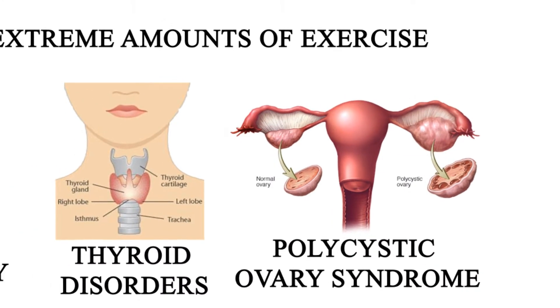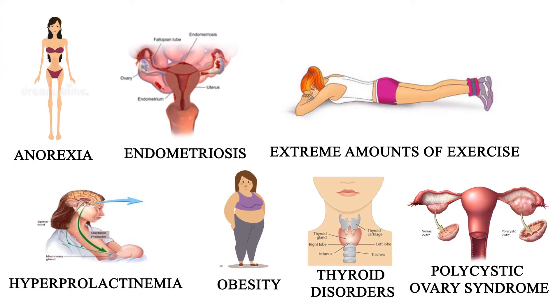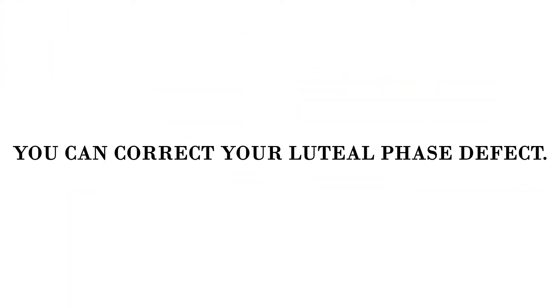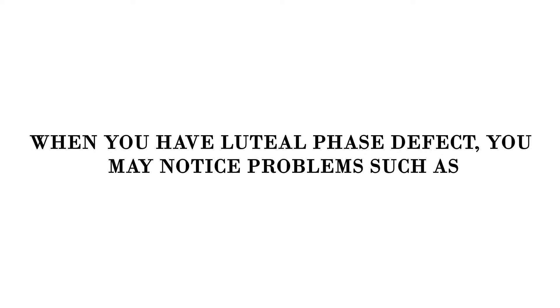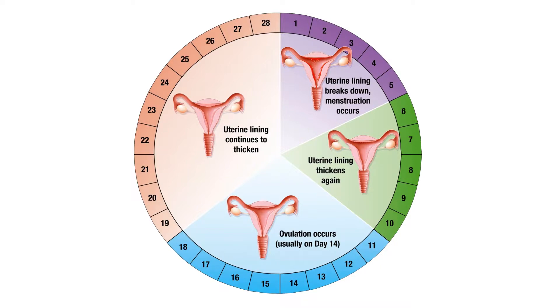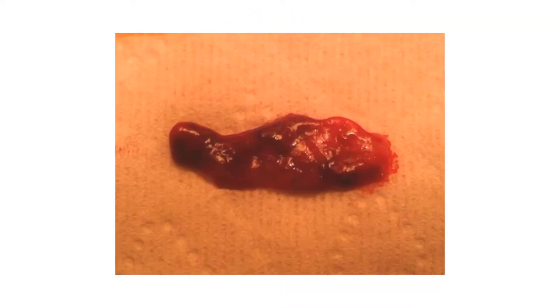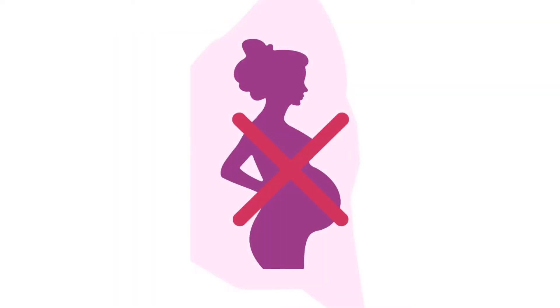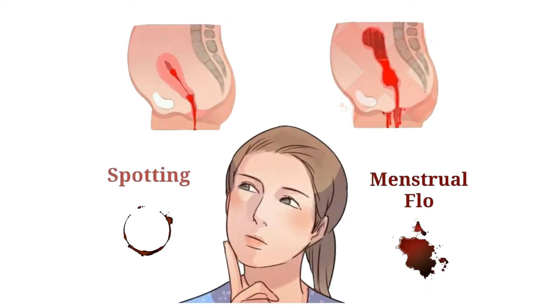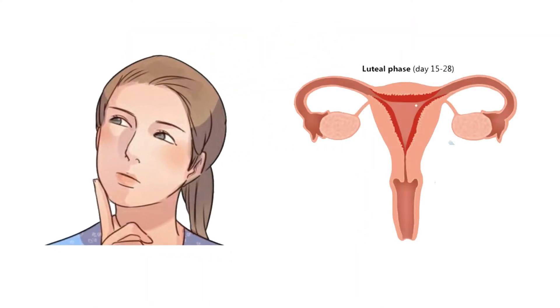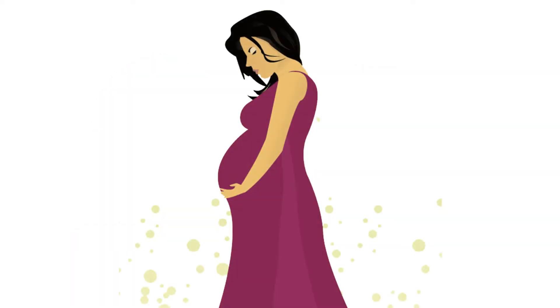Other linked conditions include obesity, thyroid disorders, and polycystic ovary syndrome. Many times, if you treat those conditions, you can correct your luteal phase defect. When you have a luteal phase defect, you may notice problems such as more frequent periods, miscarriage, trouble getting pregnant, and spotting between periods. Keep in mind that every woman can have luteal phase changes from time to time.